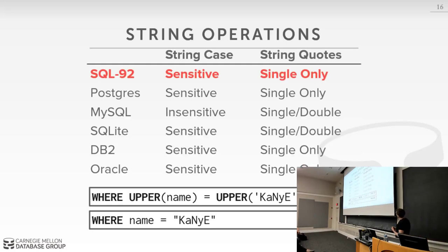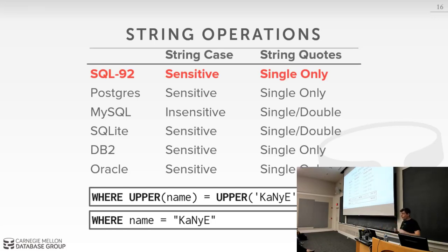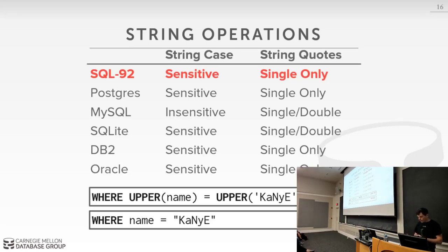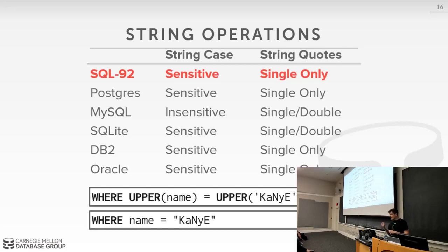Now let's talk about how strings are handled. The SQL standard says all strings — varchars, chars, text fields — must be case-sensitive and declared with single quotes. Most systems follow this. The odd ones out are MySQL and SQLite: SQLite is case-sensitive but accepts both single and double quotes; MySQL is case-insensitive and accepts either. In the SQL standard you'd use the UPPER function to ensure case-insensitive matching, but in MySQL you don't need to.